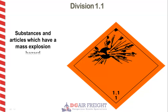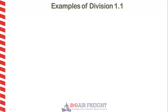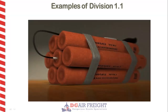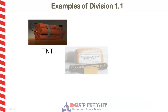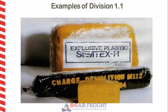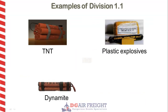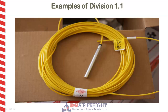The first division is Division 1.1. These are articles and substances that have a mass explosion hazard. Examples of Division 1.1 include TNT or trinitrotoluene, plastic explosives, dynamite and also detonators.